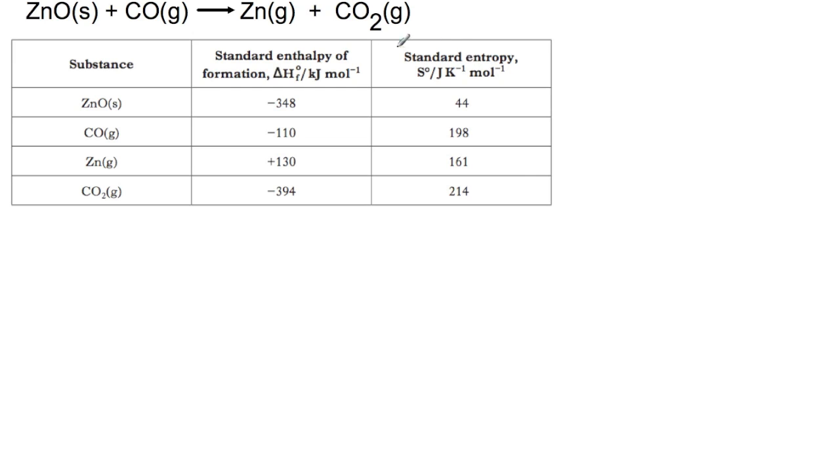We can now look at the entropy. The first thing you can do is to have a look at the equation itself and you'll be able to work out if it should be positive or negative. In this reaction we have solid zinc and gaseous carbon monoxide producing two gaseous products. So our entropy should increase as we are going from a more ordered system to a less ordered system.